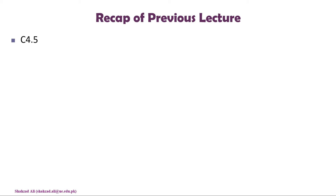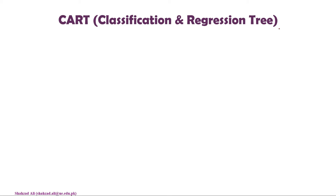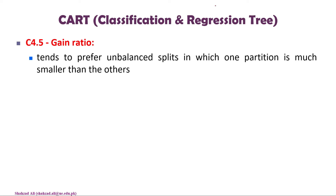In the previous lecture, we discussed the C4.5 algorithm of decision tree induction, in which the gain ratio is used as an attribute selection measure. We also solved a numerical using C4.5 algorithm with a dataset. Before that, we talked about the ID3 algorithm, which uses information gain as an attribute selection measure.